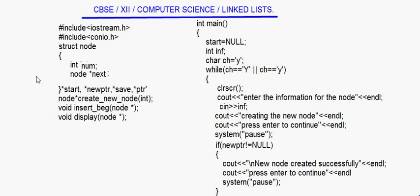The very first thing that we should have is this struct node. This node is a user-defined name — it's not necessary to have the same name 'node'; you can have any name. We have two things here: one is the information part — I am storing an integer value called 'num' — and a pointer 'next' which is pointing to the next node.